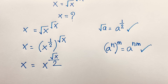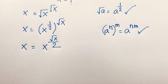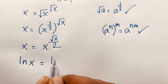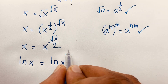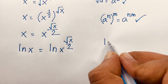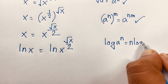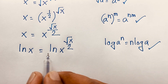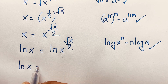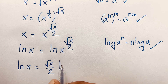Now I apply ln to both sides, so I can see: ln x is equal to ln of x to the power square root x over 2. We know that log a to the power n equals n log a. According to this law, the exponent moves out, so it will be ln x is equal to square root x over 2 times ln x.